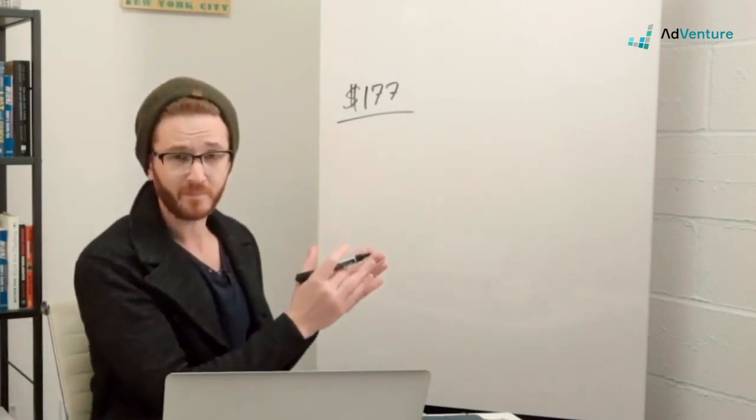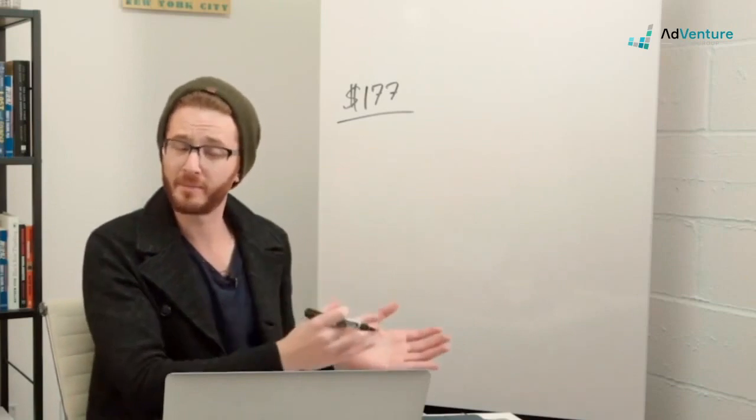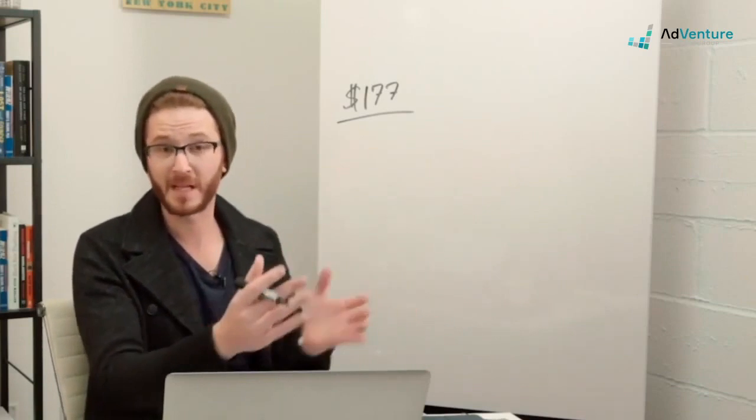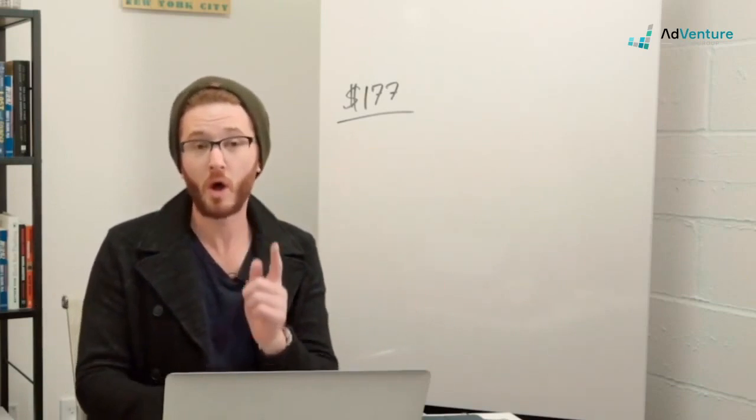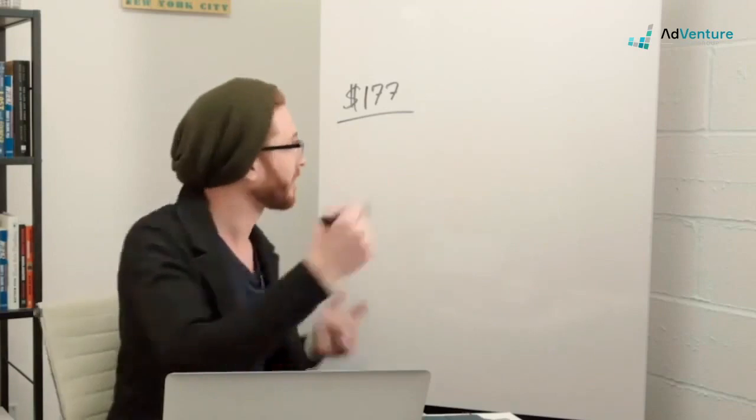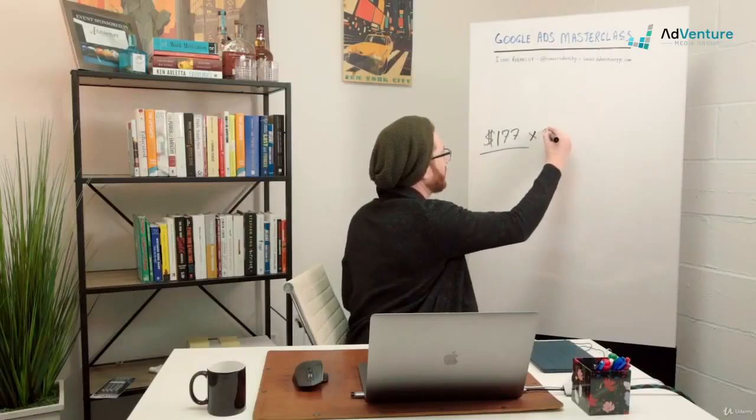Google will say okay, we might spend a little bit more, you might spend a little bit less, but we will hold ourselves to that multiplied by 30. So I take $177 and multiply that by 30. What do we get?